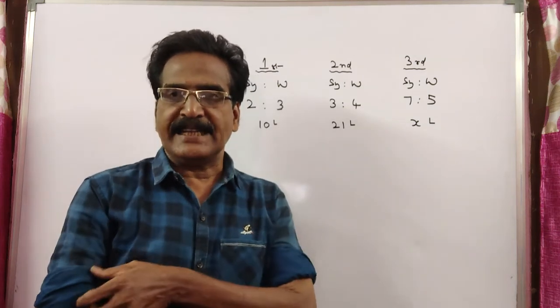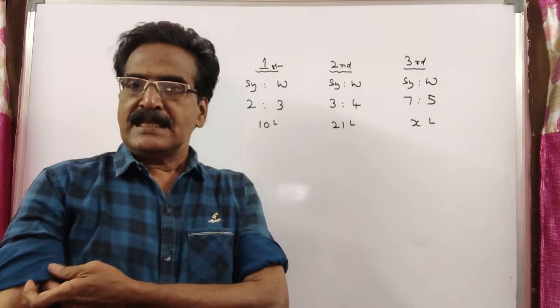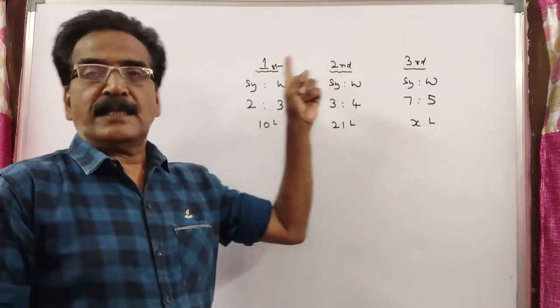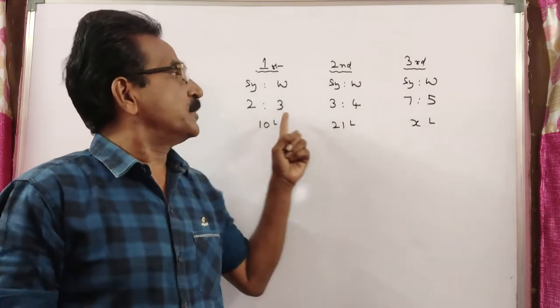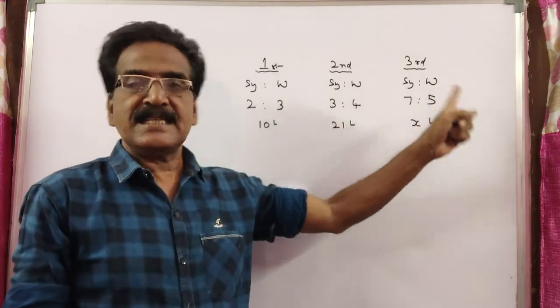Hi friends, good morning. Please look at the next problem in relation on proportion. See friends, in 3 bottles, syrup and water are in the ratio 2 is to 3, 3 is to 4, and 7 is to 5.